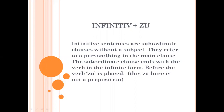These infinitive sentences refer to a person or thing in the main clause. The subordinate clause ends with the verb in its infinitive form, and before that verb, 'zu' must be placed. Note that 'zu' here is not a preposition — it is used as a conjunction and must be placed before the verb. The verb should be at the end of the sentence in its original form. When we solved 'when' sentences, we put the verb in its conjugated form, but here it is in the infinitive form. This conjunction is called infinitive plus 'zu.'